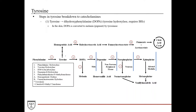The first step in tyrosine breakdown involves being converted to dihydroxyphenylalanine, or DOPA, catalyzed by the enzyme tyrosine hydroxylase, which also requires BH4 as a cofactor. In this figure, we've indicated where this pathway stops depending on which tissue you're in, because a particular tissue may not have the enzymes to catalyze the next steps in the reaction.